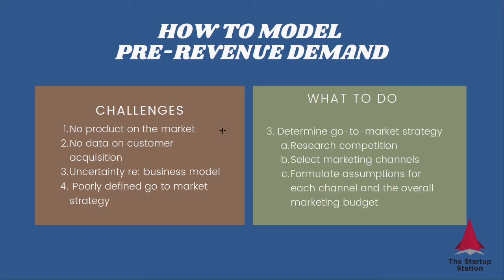The third step — and this is a difficult one — is to determine your go-to-market strategy. If you haven't done it before, this is your challenge. This is actually one of the three reasons defined by entrepreneurs as the key to not being able to raise money, because if you don't know how you're going to go to market, how are you going to generate demand and revenues? Investors have no way of knowing how you're actually going to meet the numbers you're presenting to them. So you research competition, talk to your advisory board or marketing professionals, select your marketing channels — things like digital advertising, influencers, or a sales force — and then formulate assumptions for each channel as well as the overall marketing budget.